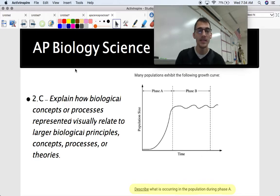And then this is also 2.C. Explain how biological concepts and processes represented visually relate to biological principles, so on and so forth. This is our FRQ, and this is pretty straightforward. Describe what is occurring in the population during phase A. So you'd have to write what is happening during phase A. Well, it's experiencing exponential growth. The rate of the population growth is increasing as well as the population. So you can tell me all about that. So yeah, this would be telling me about what is this? How does it relate? And then there might be some follow-up questions like what could be happening in this environment that is causing this type of growth in phase A?